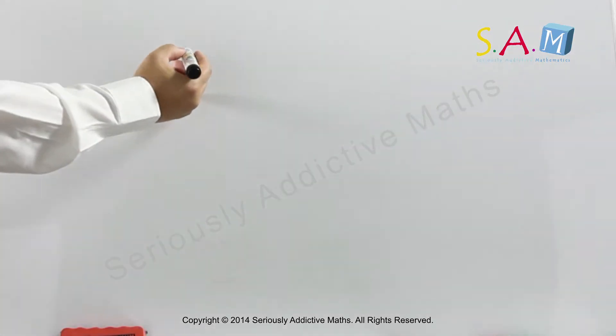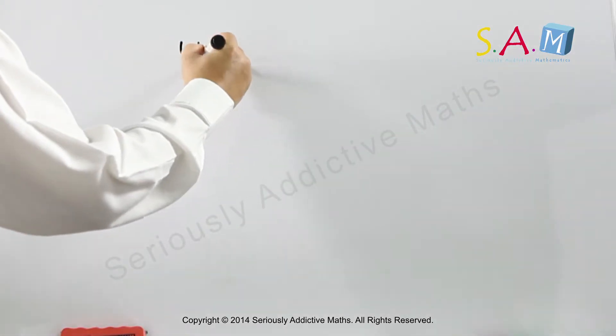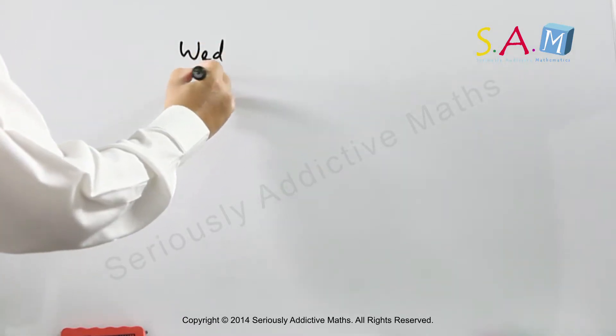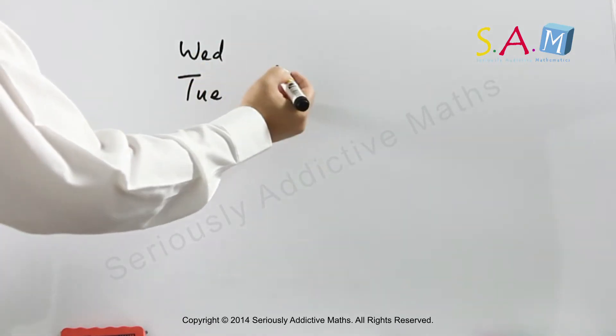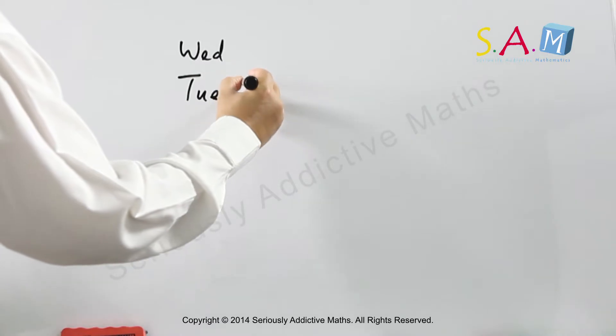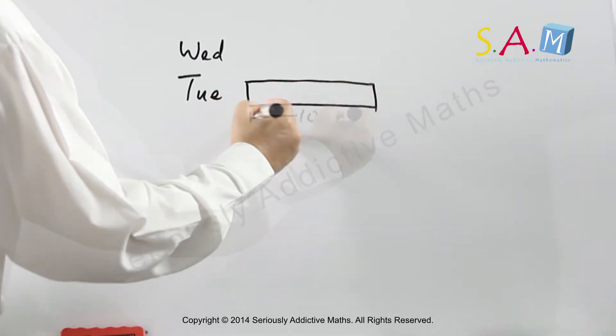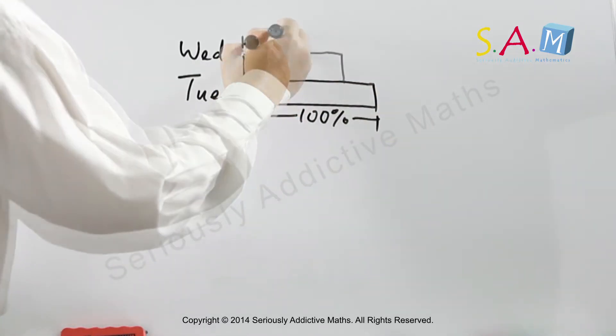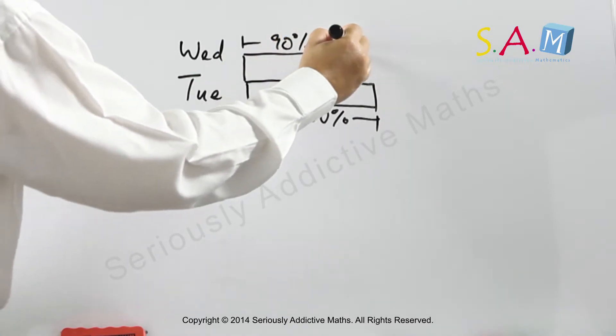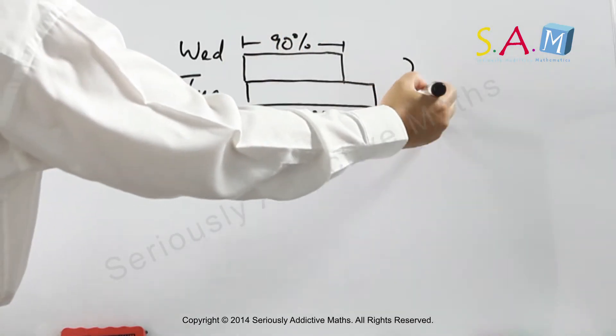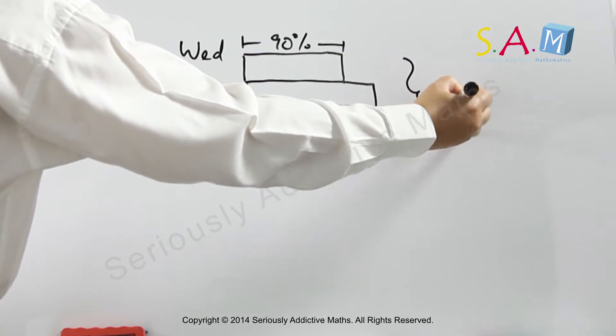James' pay for Wednesday is 90% of Tuesday, so if Tuesday is 100%, Wednesday is 90%, and we're told that pay for two days is $76.